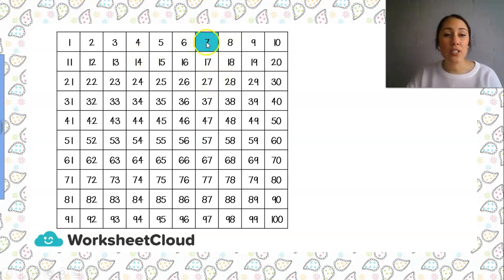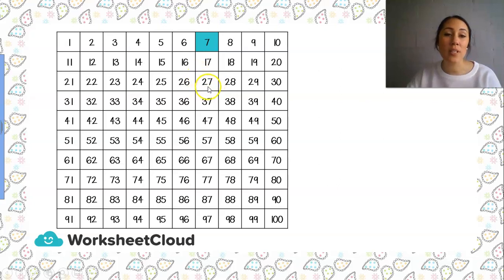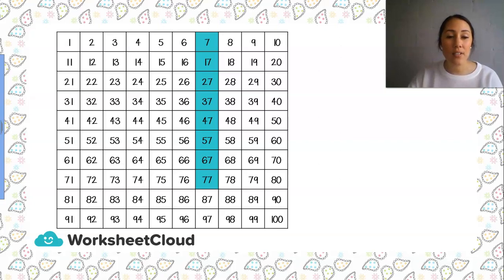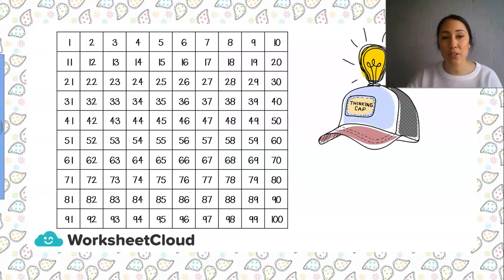So when we get to 7 and we add a 10, it's going to land on 17, and only our 10 is going to change every time we add 10. From 17, we're going to hop to 27, and our 10 changes from a 10 to a 20. So let's count together from 7: 17, 27, 37, 47, 57, 67, 77, 87, and 97. Well done, Grade 2s.